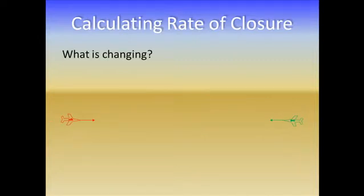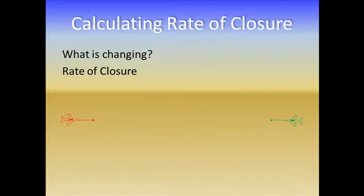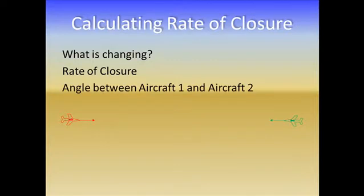So what is changing? The first thing is the rate of closure — we saw that we went from about 500 knots of closure to zero knots of closure to a negative closure. And the other thing that was changing was the angle between aircraft one and aircraft two.